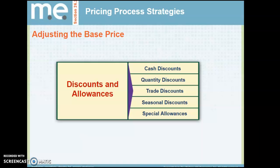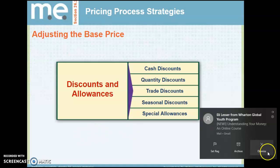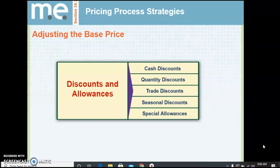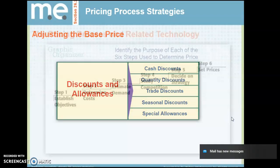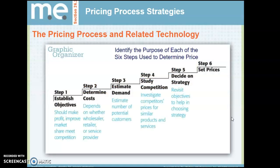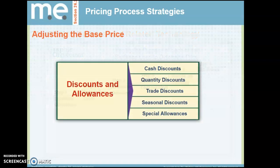Adjusting the base price involves discounts and allowances: cash discounts, quantity discounts, trade discounts, seasonal discounts, and special allowances. A cash discount is simply a reduction in price. A quantity discount means buying more of an item gets you a better deal. A trade discount involves trading an item to get a better price. Seasonal discounts might mean life jackets go on sale at the end of summer. Special allowances cover various reasons for a discount, like a senior citizen discount.